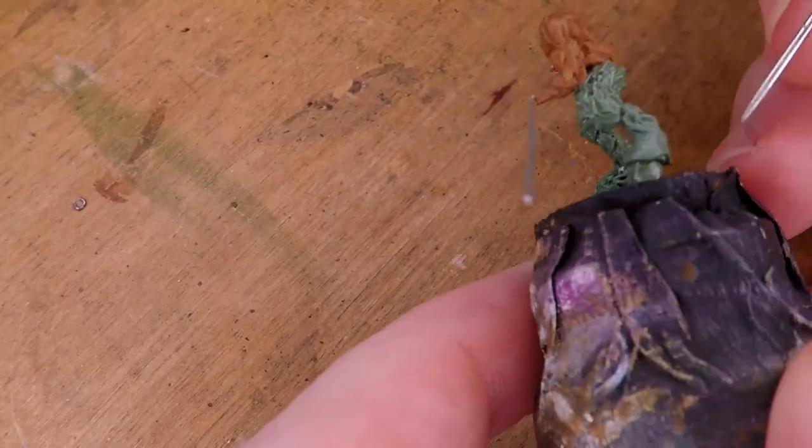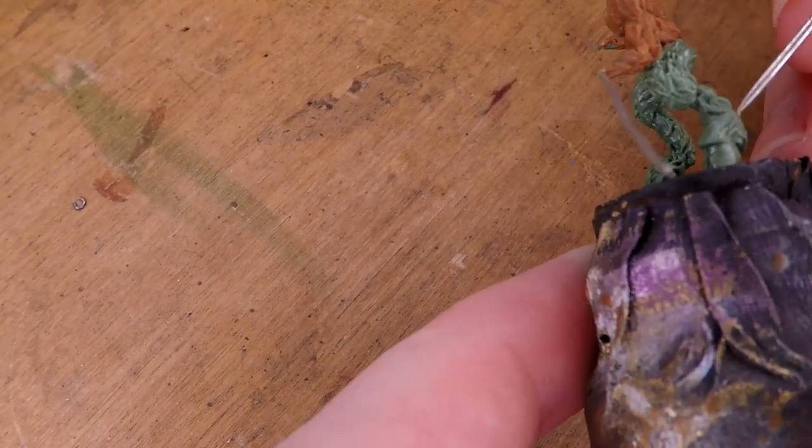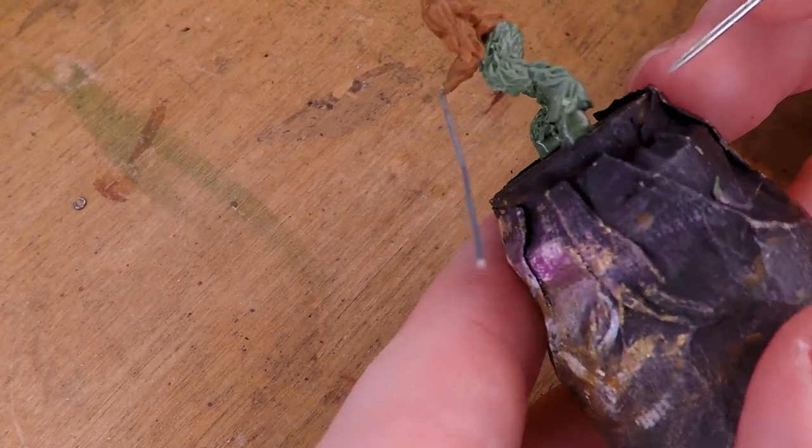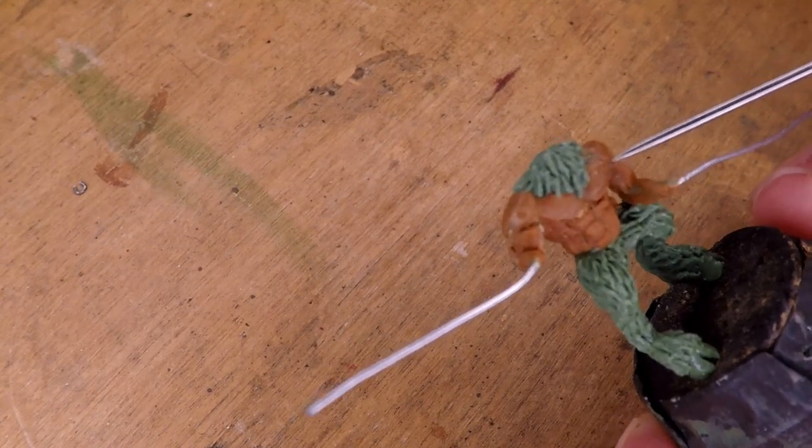For the legs of the minotaur and the fur I decided to just use green stuff because having worked with the Milliput on the anatomy I could tell that doing fur with the Milliput wouldn't make any sense. And I also add a little bit of fur around the shoulders.